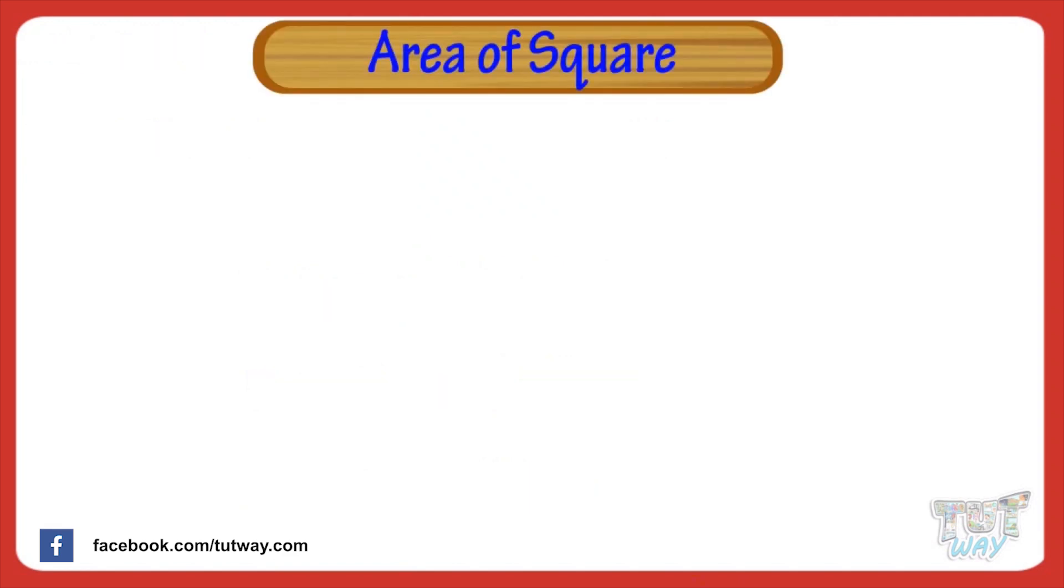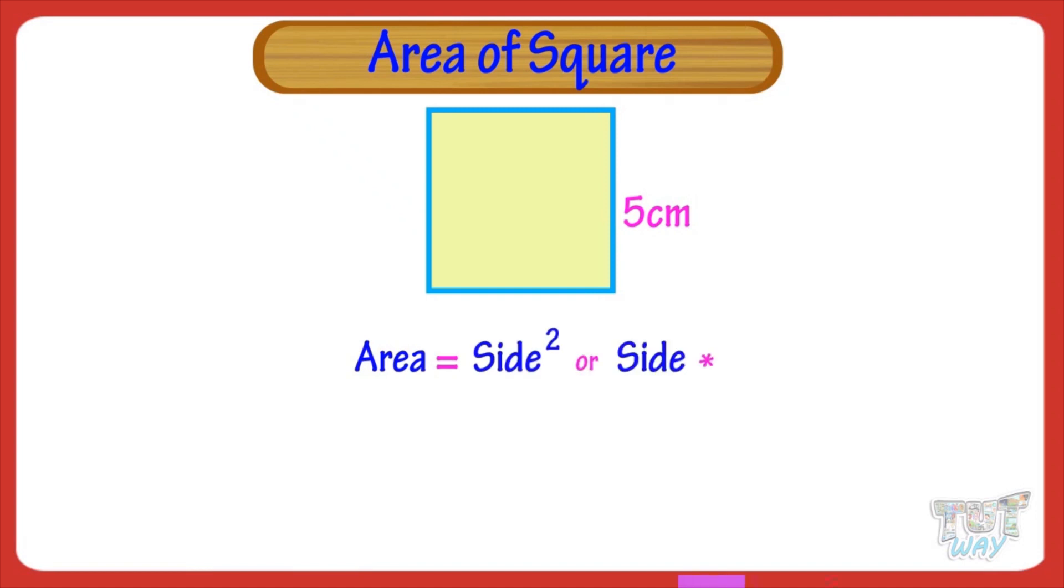Now, let's learn how we find area of a square. Here we have a square with its side mentioned. It is 5 cm. The formula for finding area of a square is side square, or side multiplied by side.